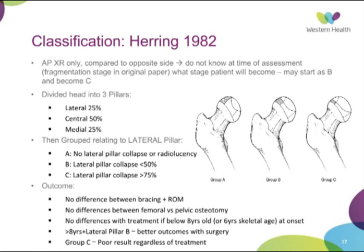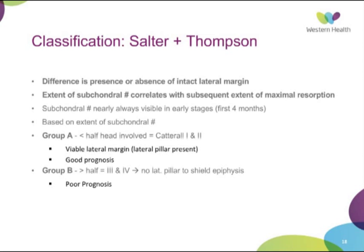The Salter and Thompson classification is also worth knowing. It is similar to the Catterall classification, also focused on the lateral margin and the lateral pillar that shields the epiphysis from stress. The primary feature here is the subchondral fracture, which guides how much the epiphysis is going to resolve.